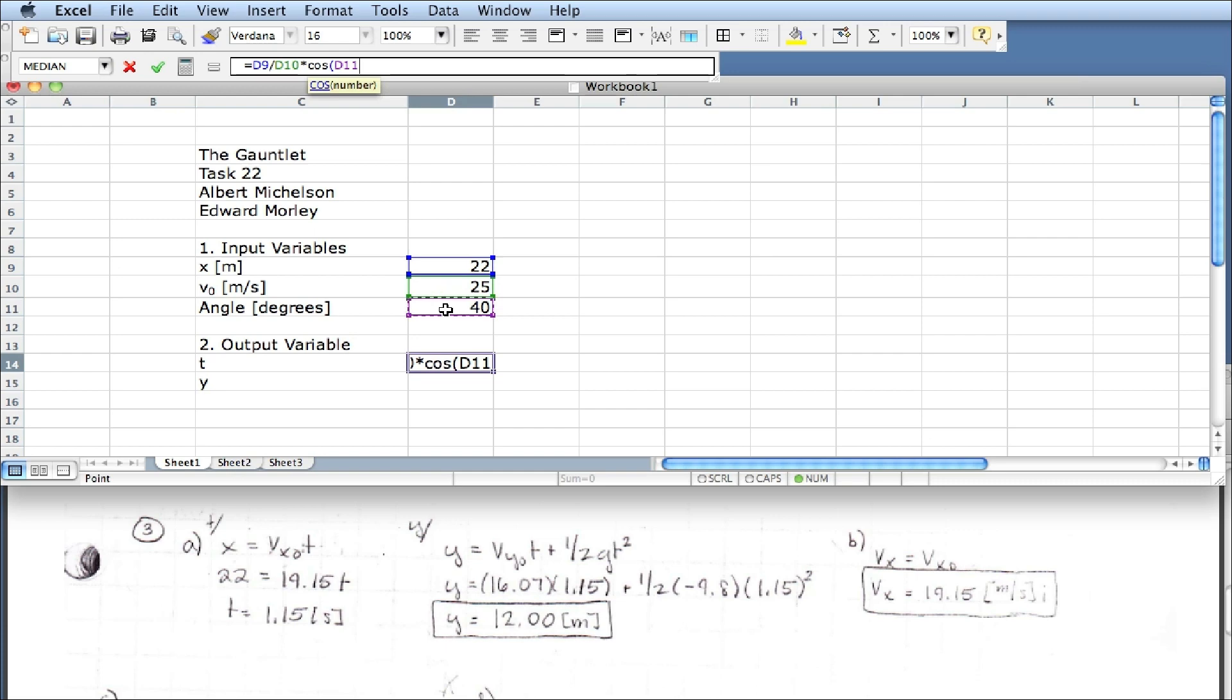However, Excel expects any variable into a trigonometric function to be radians. We have degrees. So I'm going to have to multiply by pi over 180. So there's actually a function for pi, pi parentheses, divided by 180. And I should put parentheses all around this thing. So d9, which is the x value, divided by d10, that's v0 cosine theta. And if I hit enter, 1.14, and that's 1.14, 1.15.